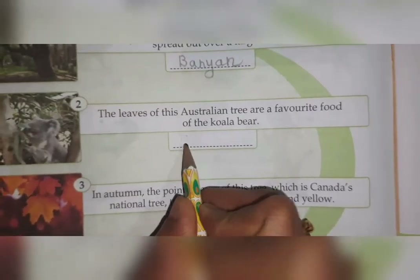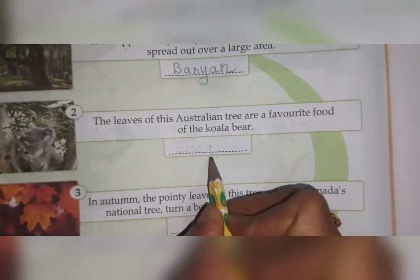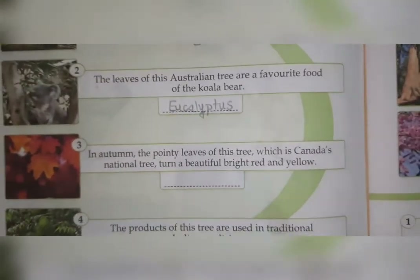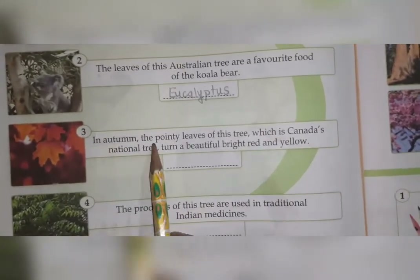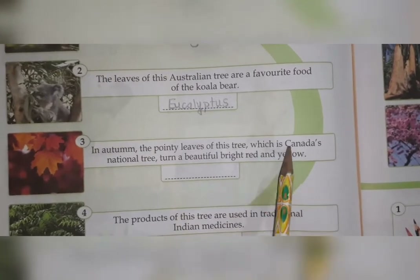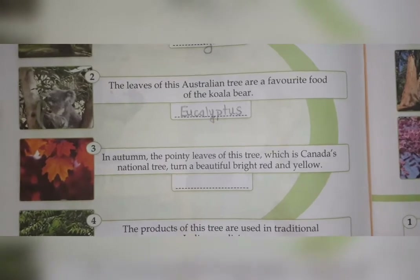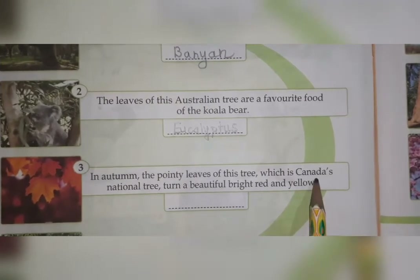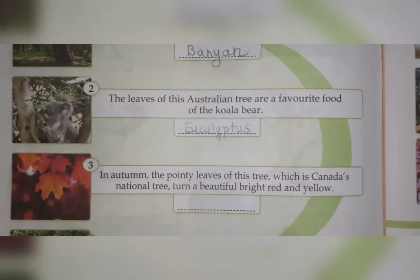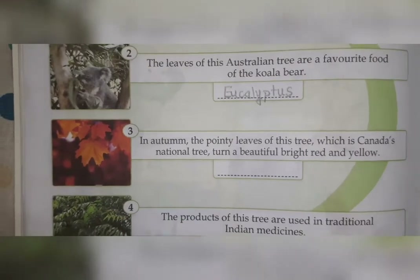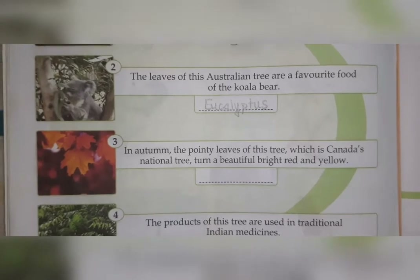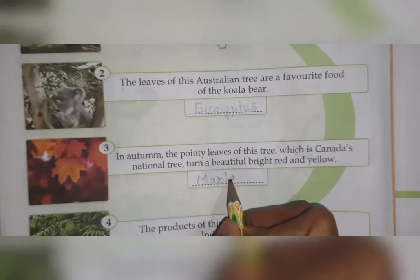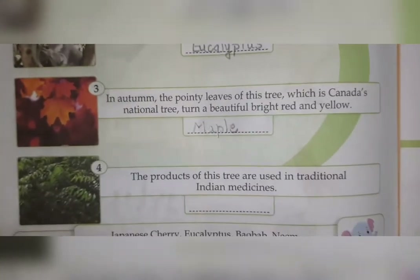Next one: 'In autumn, the pointy leaves of this tree, which is Canada's national tree, turn a beautiful bright red and yellow.' On Canada's flag you can see the leaf of this tree. So which tree is it? It's a maple tree — M-A-P-L-E, maple. Its leaves turn red and yellow.